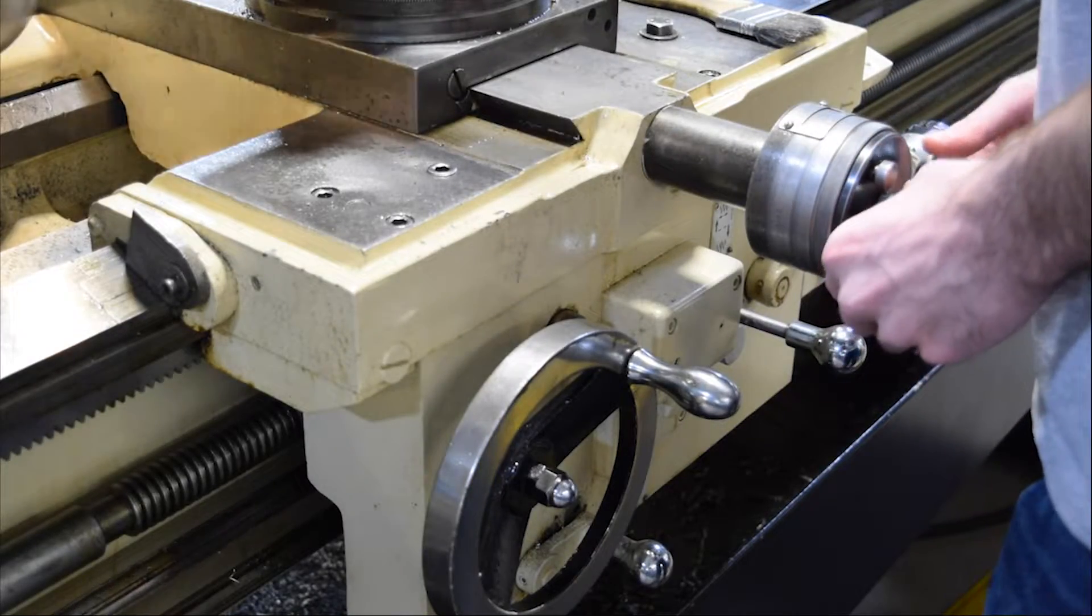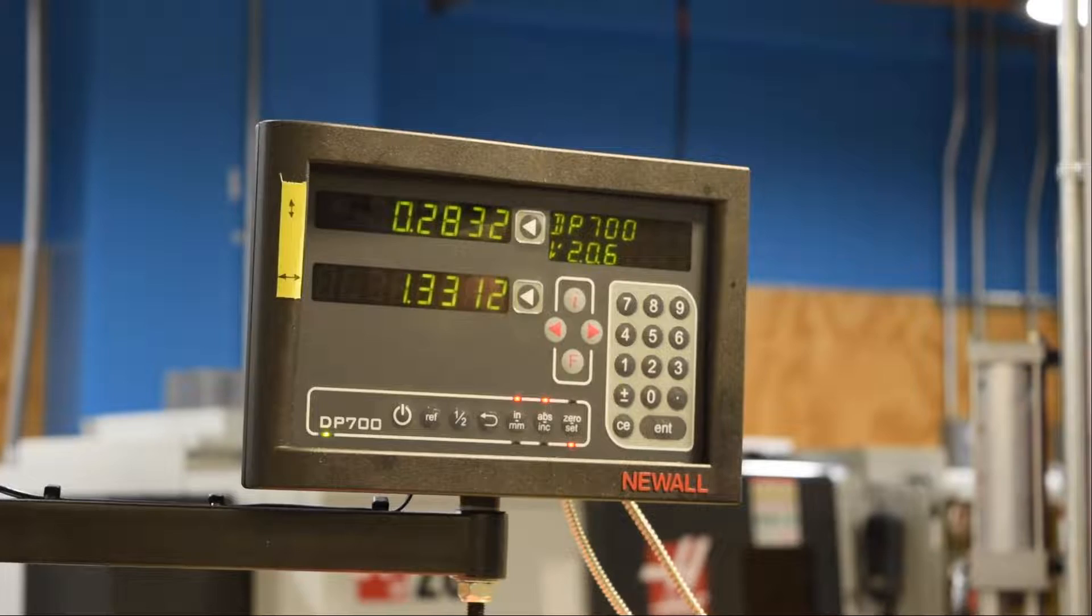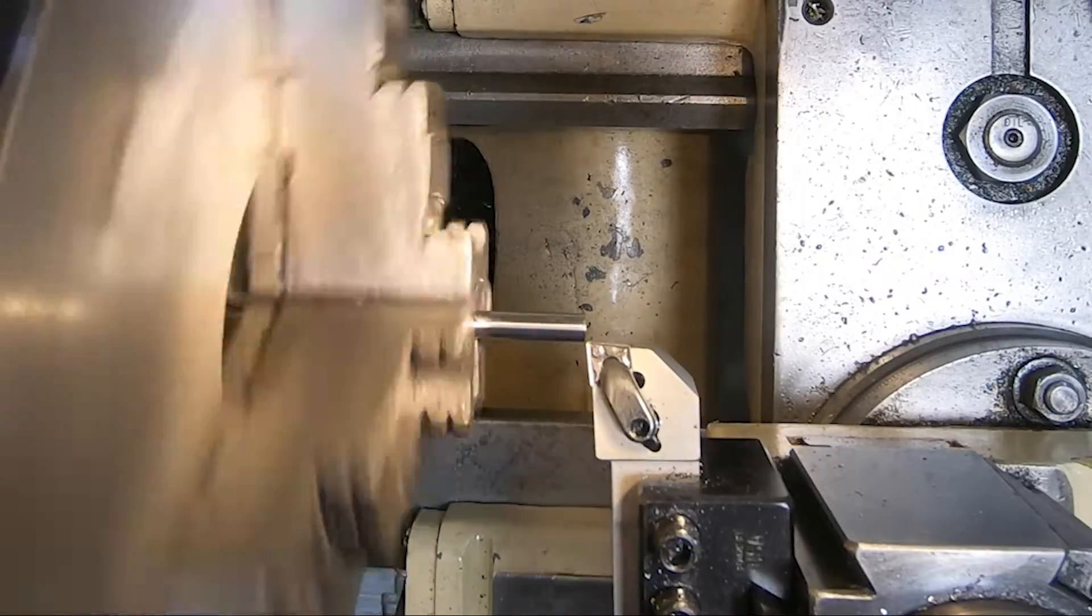Now you might think that if you're cutting really hard material that you would want to take a very shallow depth of cut, but that doesn't really work that well, and I'll show you that in a little experiment. Here I'm taking only 10 thousandths off the diameter with each pass. So that's a five thousandths of an inch depth of cut.